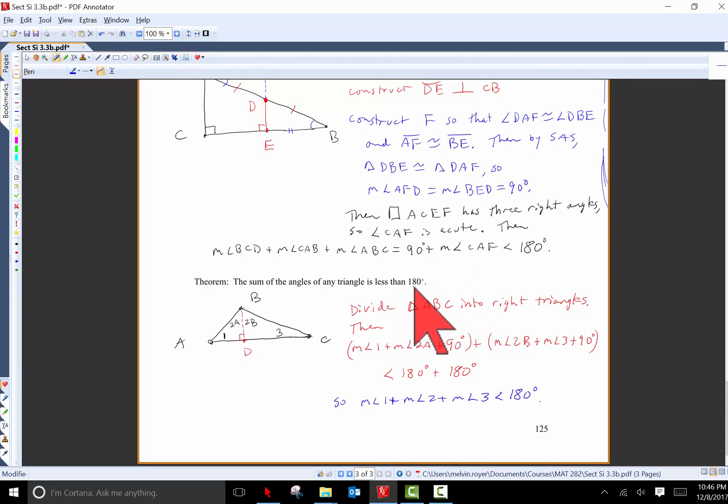Last result, the sum of the angles of any triangle is less than 180 degrees in hyperbolic geometry. So here's any triangle ABC. And if you start at the largest angle and run a perpendicular to the opposite side, it will intersect between the two endpoints. So I can split triangle ABC into two right triangles like this. Then if we take the angle sum of each of the two right triangles, angle 1 plus 2A plus the right angle 90 degrees. And in the right triangle 2B plus 3 plus another 90 degrees. Each of these angle sums has to be less than 180.